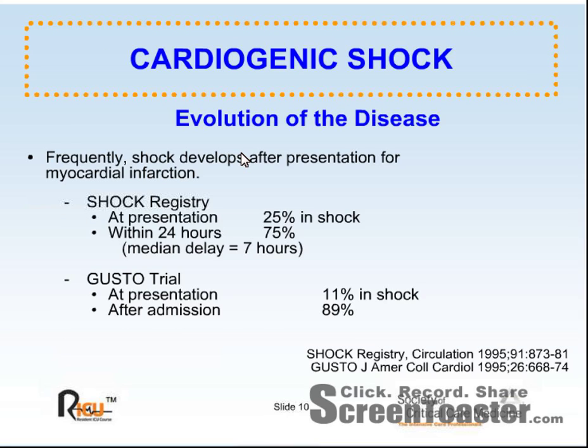In patients with acute myocardial infarction who develop shock, only 25% will present in shock at hospital admission; shock often develops during the first day of hospitalization. In the SHOCK trial registry, the mean time from onset of myocardial infarction to shock was 7 hours. In the GUSTO trial of 1995, 11% were in shock at presentation and 89% developed or were diagnosed with shock after admission.